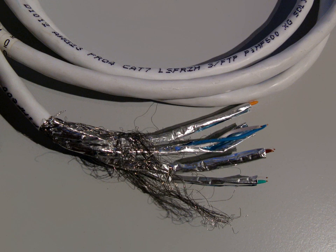Class E link channel up to 250 MHz using Category 6 cable connectors. Class E-A link channel up to 500 MHz using Category 6A cable connectors, Amendment 1 and 2 to ISO/IEC 11801 2nd edition.